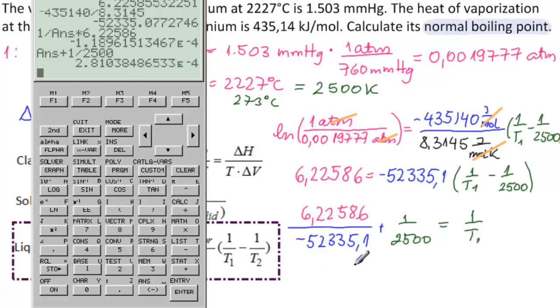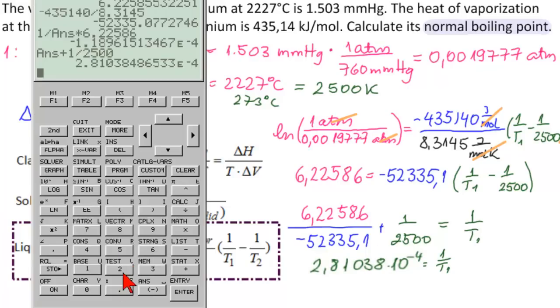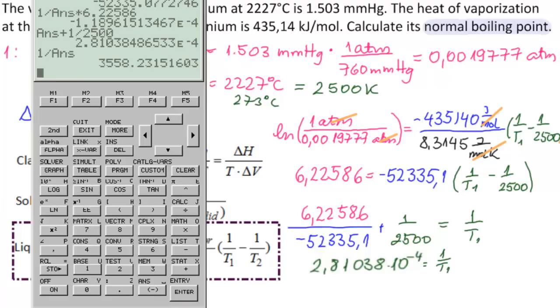So this is 2.81038 equals 1 over T1. So we need 1 over that. So 1 divided by answer equals 3558 Kelvin.